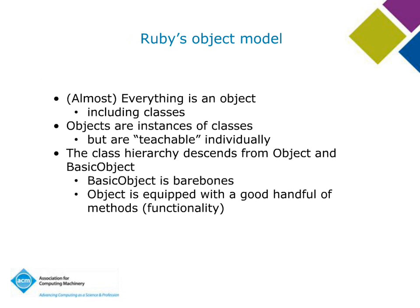Let's delve a little bit into Ruby's object model. Ruby is object-oriented, and almost everything in Ruby is an object, including classes. Classes are actually themselves first-class objects. Any object is an instance of a class, but you can also teach objects individually — a given object can actually acquire behaviors or methods that other objects of the same class don't have. Objects can actually travel away from the class that created them and do other things.